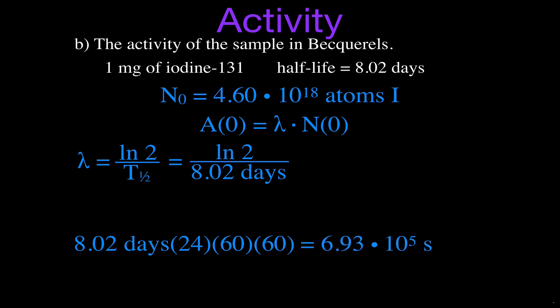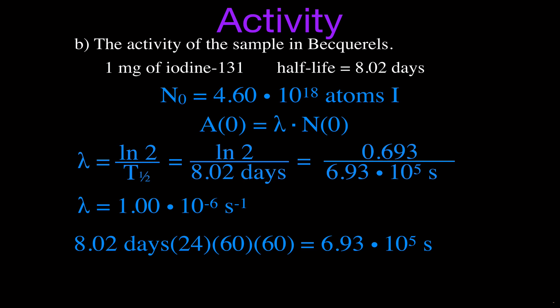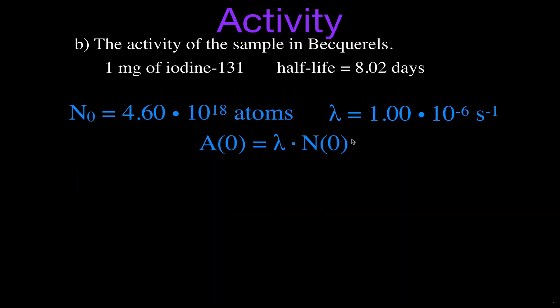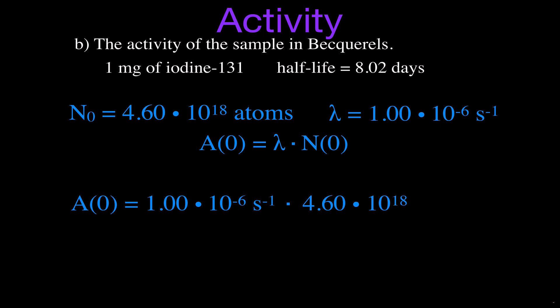That works out to be 6.93 times 10 to the 5th seconds. The natural log of 2 is 0.693. Dividing these two numbers, the decay constant is 1.0 times 10 to the minus 6 seconds to the minus 1. Now we can plug that into our equation: 1.0 times 10 to the minus 6 per second times 4.6 times 10 to the 18 nuclei, which gives us an activity of 4.60 times 10 to the 12 Becquerels — that is the activity for 1 milligram of iodine-131, which has a half-life of 8.02 days.